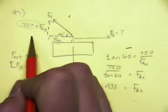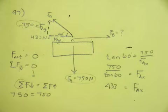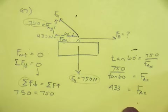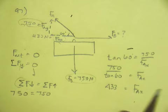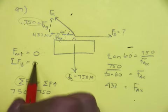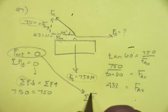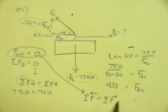So I know that this is pulling to the left at 433 newtons. Now, here we go. So this net force also says that everything that pulls to the left equals everything that pulls to the right.